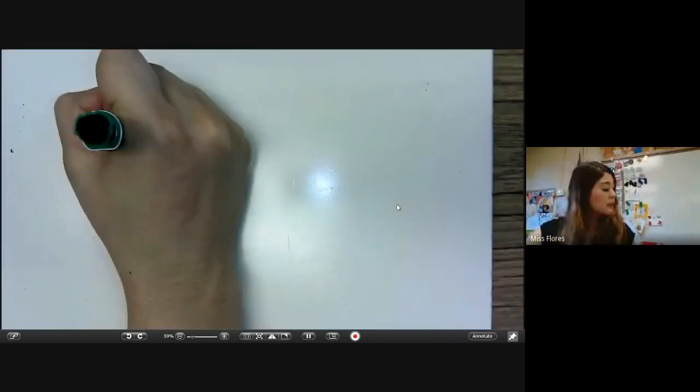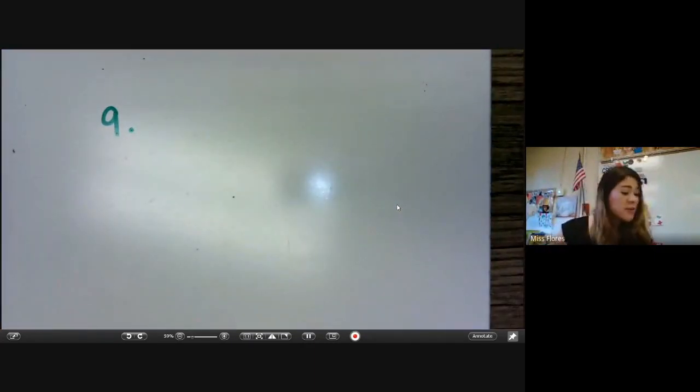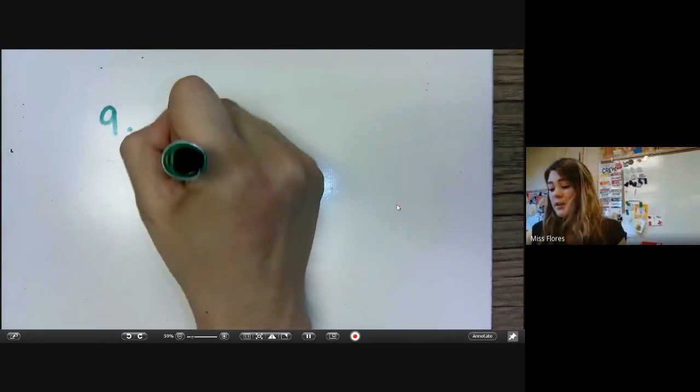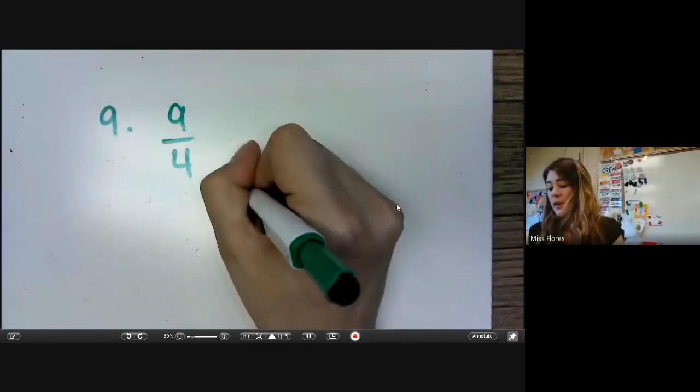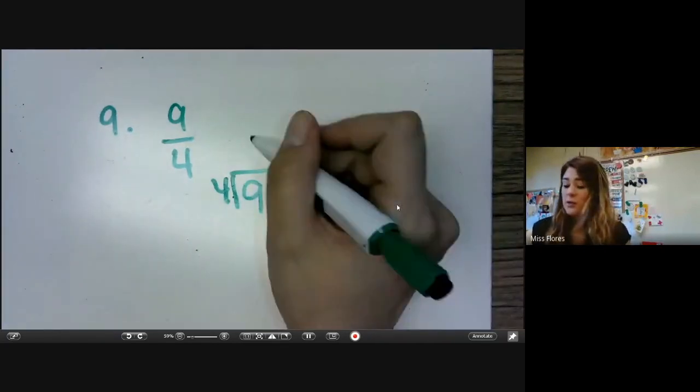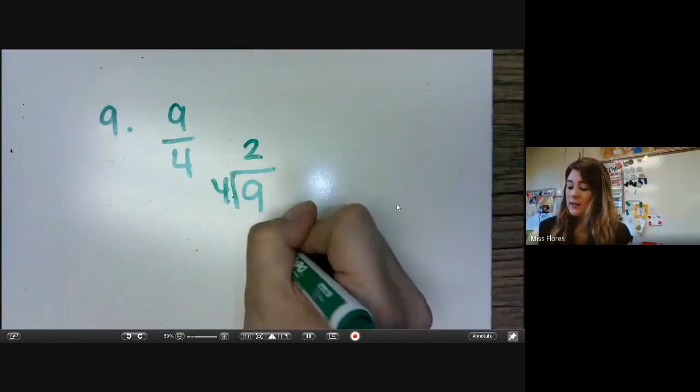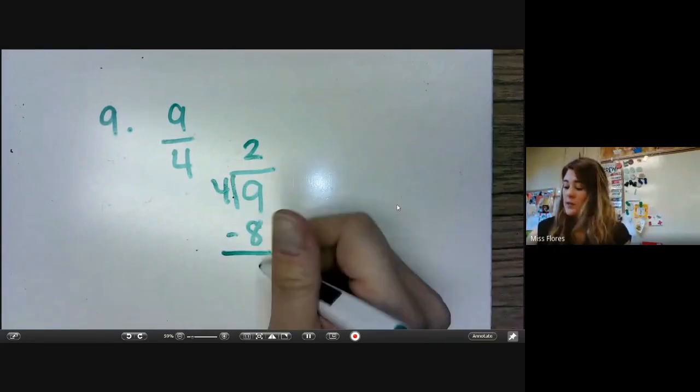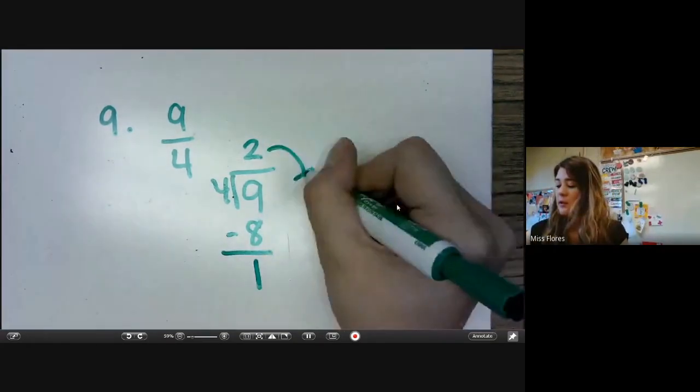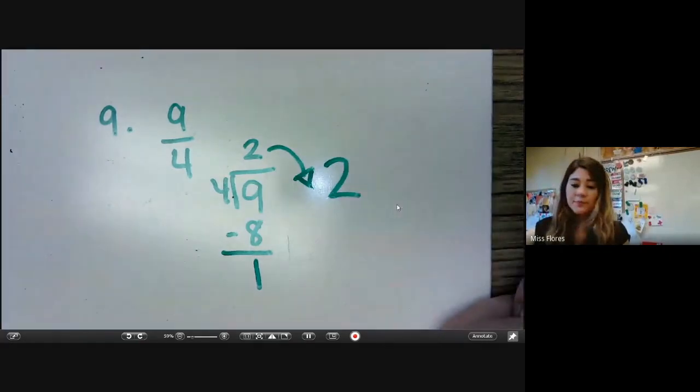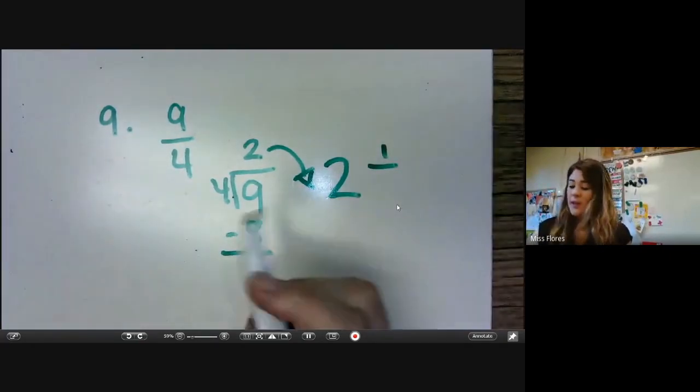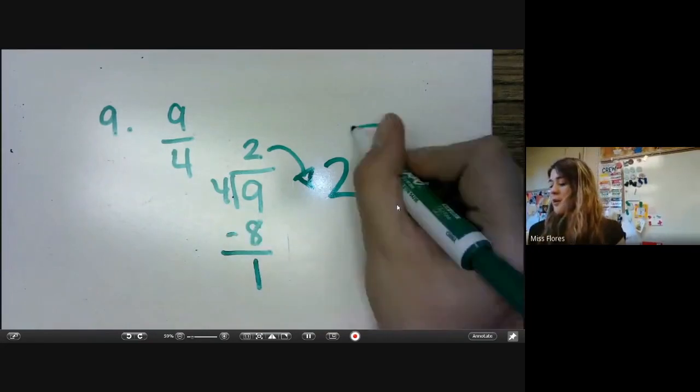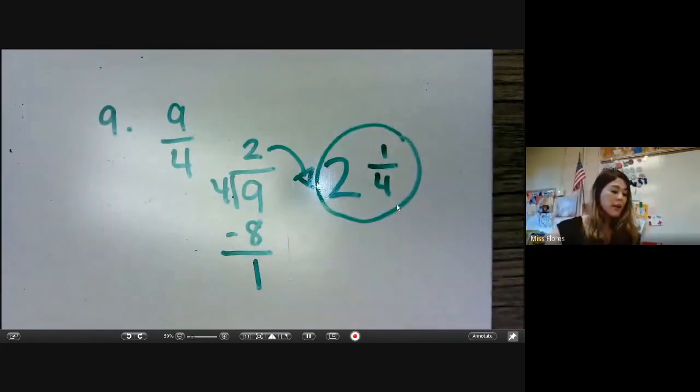Let's do number nine. Let's change the improper fraction nine over four to a mixed number. So this is the improper fraction that they give us. So what we need to do is we need to divide. Nine divided by four. Four goes into nine two times, and we get eight. Nine divided by eight is one. So remember, this number becomes our whole number. And this number becomes our numerator. And this number becomes our denominator. So your answer is two and one-fourth.